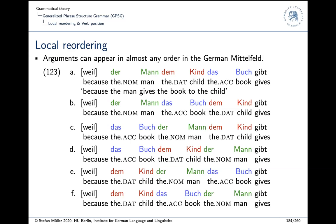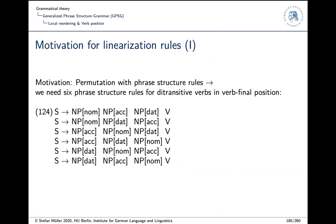For some orders you need special context; for some it's better if you have pronouns in the initial NP. But in principle all six permutations of these elements are possible.